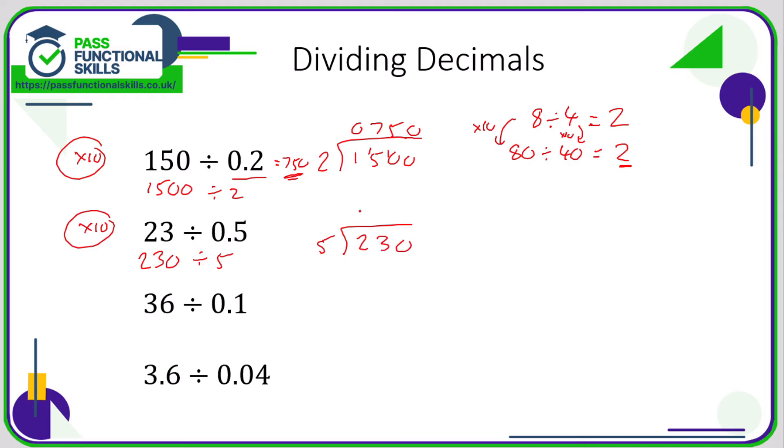36 divided by 0.1. This one's really easy. Multiply both by 10, we're going to get 360 divided by 1. And anything divided by 1 is the number you've started with, which is 360.